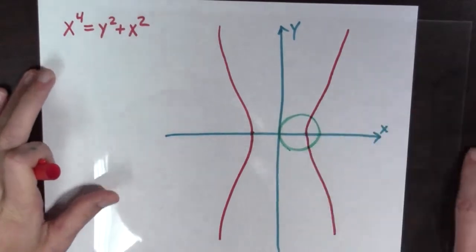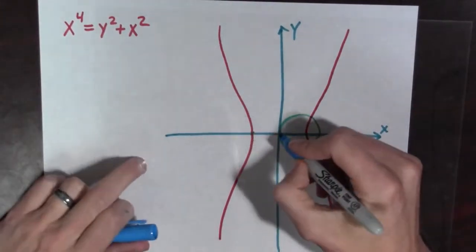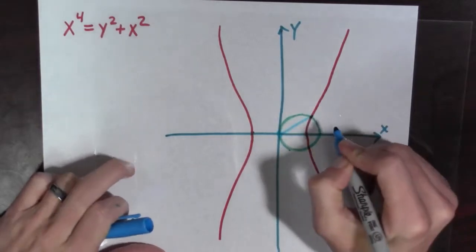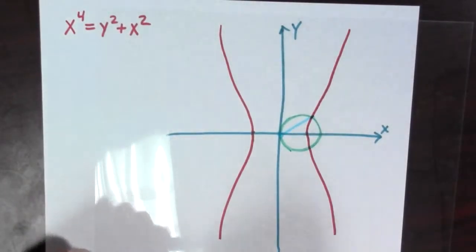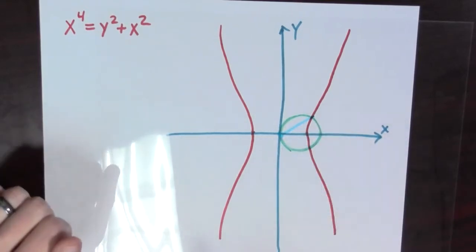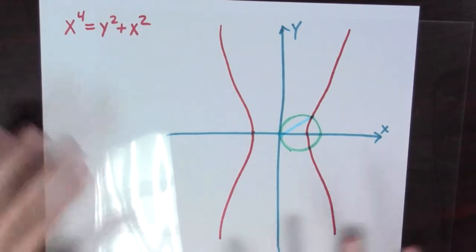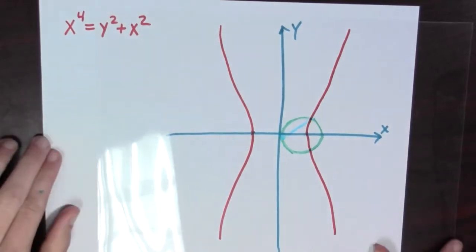the origin to the intersection point of the curve and our circle. This distance is the cube root of two. And so this is what Eudoxus was thinking about when he drew this curve.